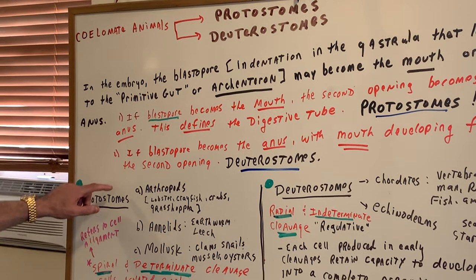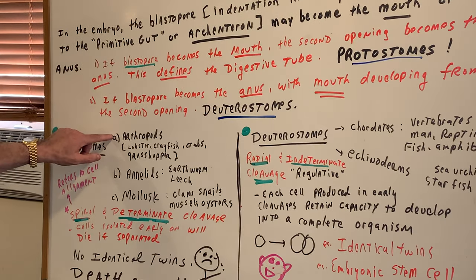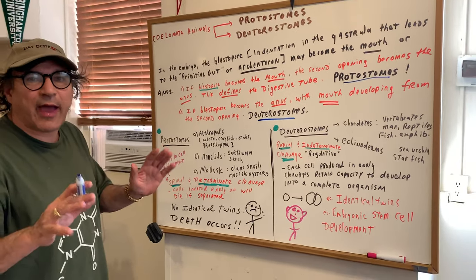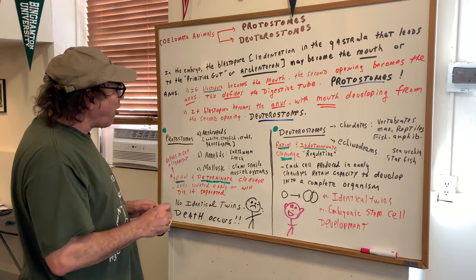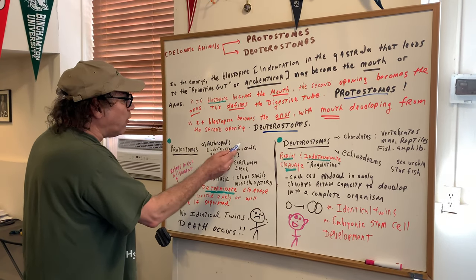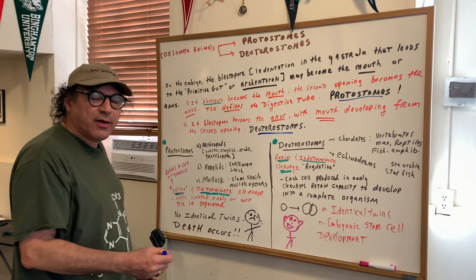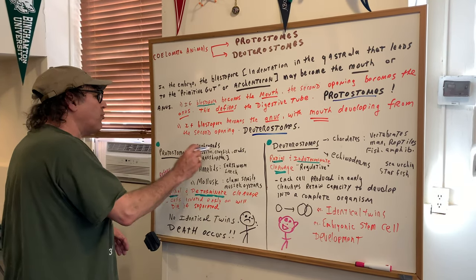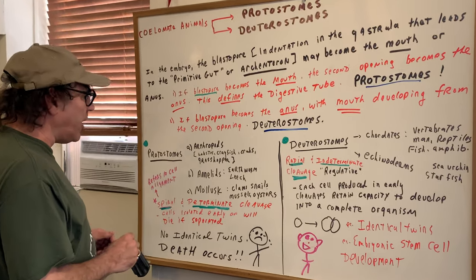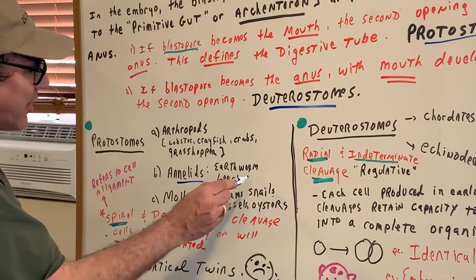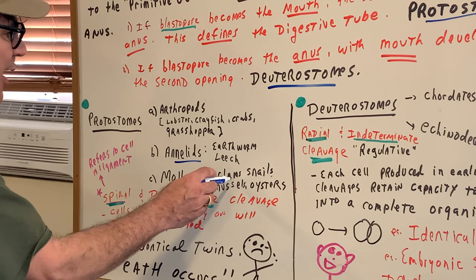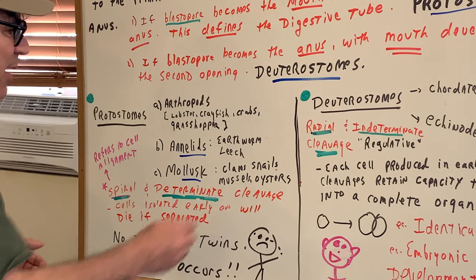Protostomes include arthropods, annelids, and mollusks — it's a guaranteed type of question. Arthropods include insects, lobsters, crayfish, and crabs. Annelids are leeches and earthworms. Mollusks, as you know, are clams, snails, mussels, and oysters.